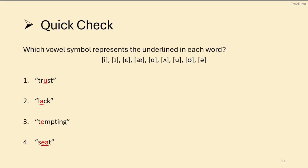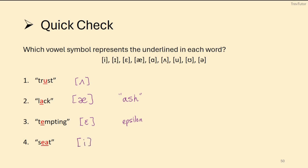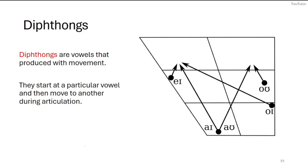Here's a quick check — listen to the vowel sound and pick the symbol. In 'trust,' it's a stressed syllable so we use the caret /ʌ/. In 'black,' we have our low front unrounded vowel, the ash /æ/ symbol. In 'tempting,' we have 'eh' — our mid front unrounded lax vowel, epsilon /ɛ/. And for 'seat,' we have /iː/ — the high front unrounded tense vowel, the lowercase letter i.